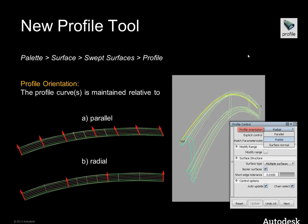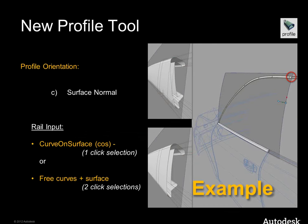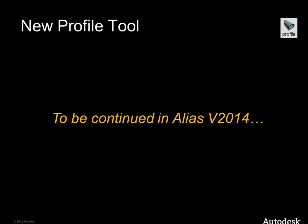One important thing about the profile tool: the surface normal option is new, and you have two possibilities — either the rail as a curve on surface requiring one click, or as Bezier curves plus surface requiring two clicks for the rail and surface. This is phase one only of the new profile tool — we plan this over more than one release. Stay tuned for more profile options in Alias 2014.